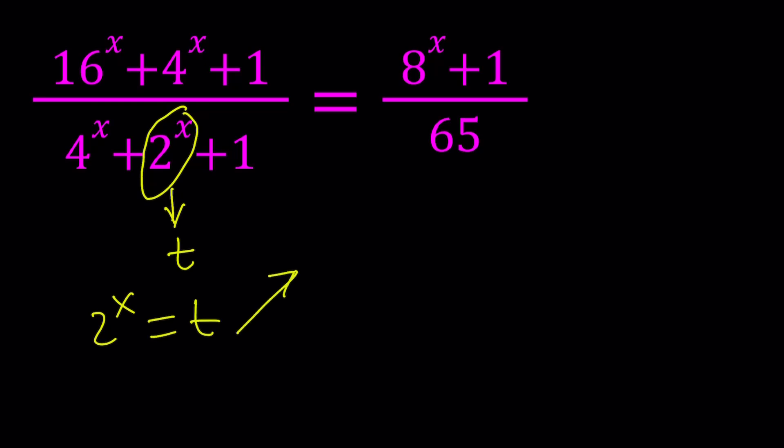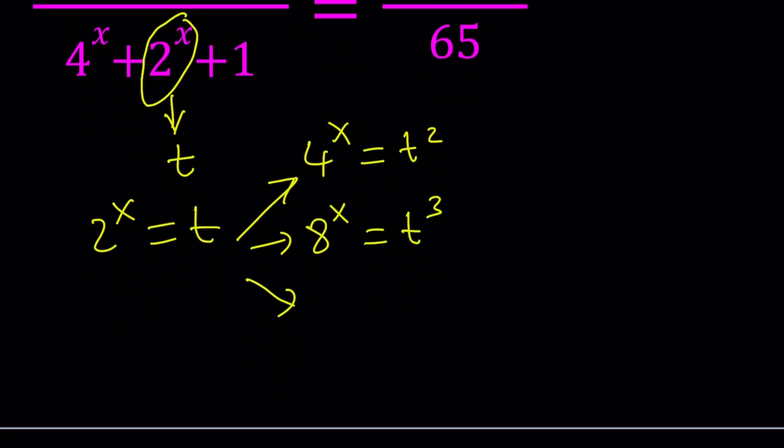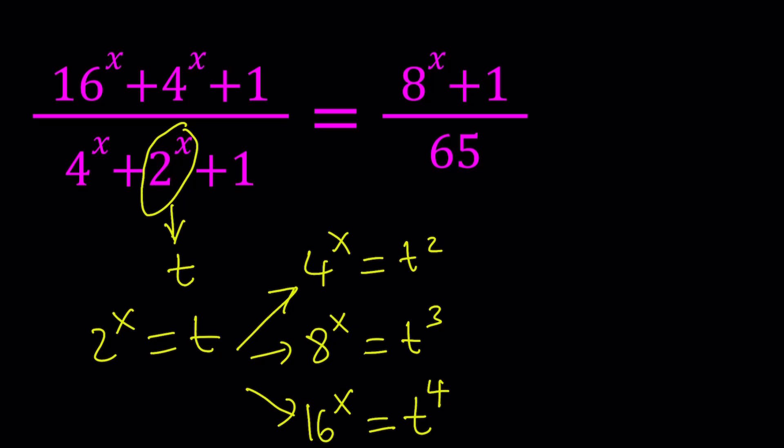For example, if you square both sides, you get 4 to the power x, which is t squared. If you cube, you get 8 to the x, which is t cubed. And then if you raise both sides to the fourth power, you get 16 to the power x equals t to the fourth power. Make sense? So we were able to express everything in terms of t. So instead of dealing with exponential expressions, we're going to be dealing with polynomials. Obviously, it's a lot easier to do.